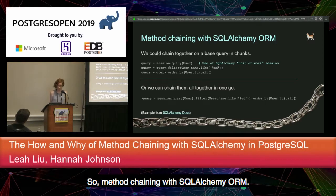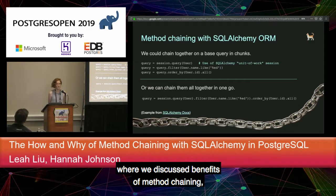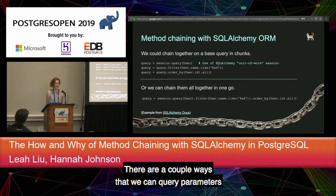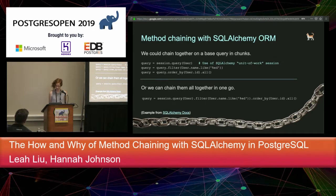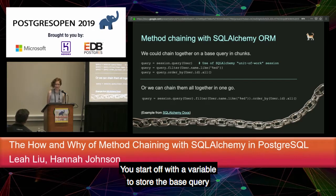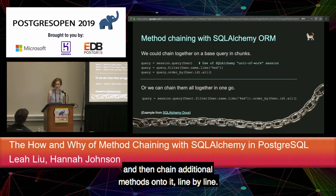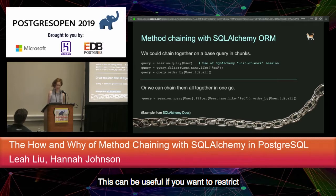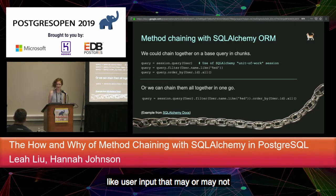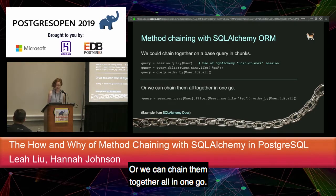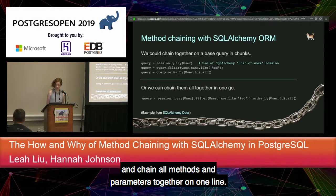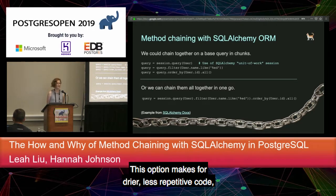Now let's look at method chaining specific to SQLAlchemy. There are two ways to chain query parameters. First, you can chain together on a base query in chunks: start with a variable storing the base query, then chain additional methods line by line. This is useful if you want to conditionally add query logic based on user input that may or may not be present. Or, you can chain them all in one go — save results in a variable and chain all methods together on one line. This makes for drier, less repetitive code, and it looks nice.